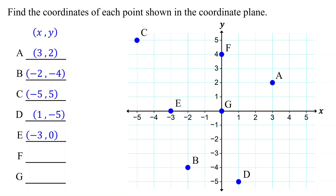Please feel free to pause the video and find the coordinates of point F. It is on the y-axis at y equals 4, so its y-coordinate is 4. Note that since the y-axis is at x equals 0, any point on the y-axis has an x-coordinate of 0. So, the x-coordinate of point F is 0. Therefore, its coordinates are (0, 4).